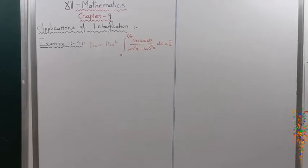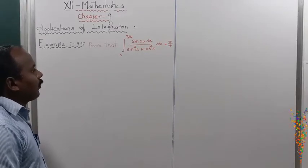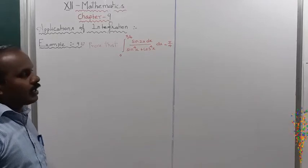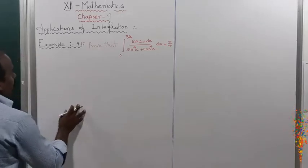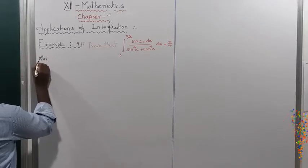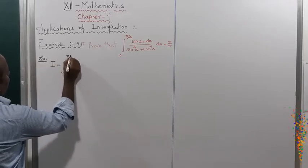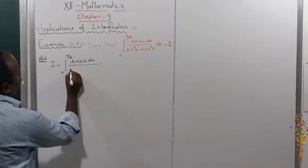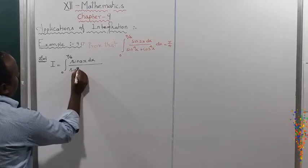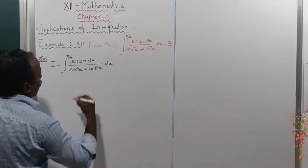Example 9.17: proof that the integral from 0 to π/4 of sin(2x) dx divided by sin⁴x plus cos⁴x equals π/4. Solution: I is equal to the integral from 0 to π/4 of sin(2x) dx divided by sin⁴x plus cos⁴x.